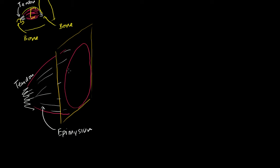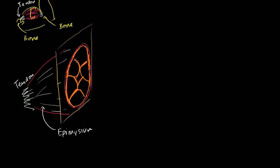Within this muscle, you have connective tissue on the inside — I'll do it in orange. This orange tissue divides off little fibers of some sort. This is called the perimysium, and that's also just connective tissue inside of the actual muscle.